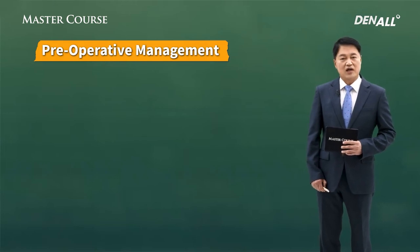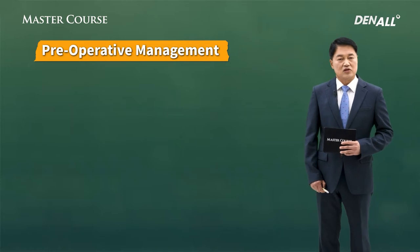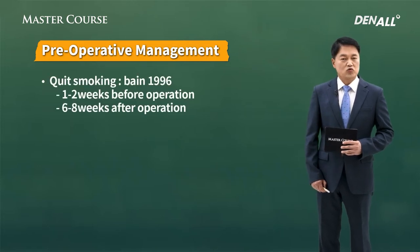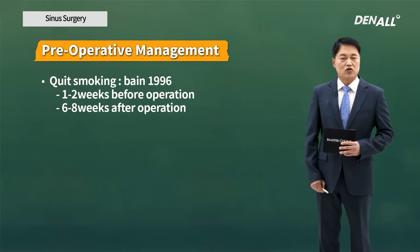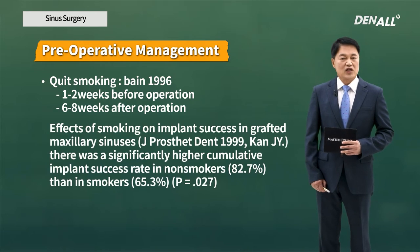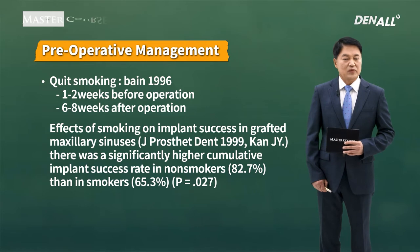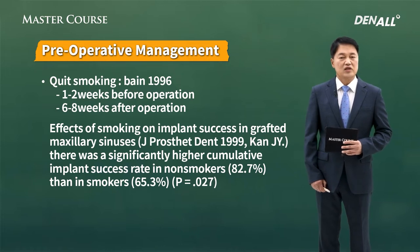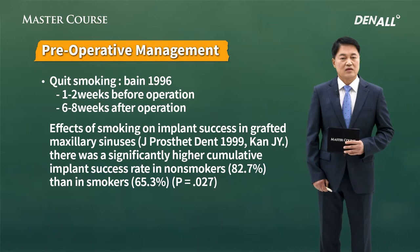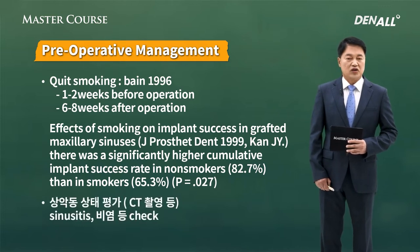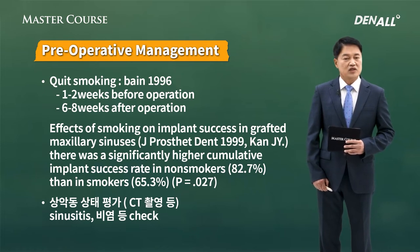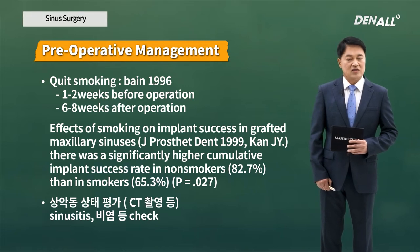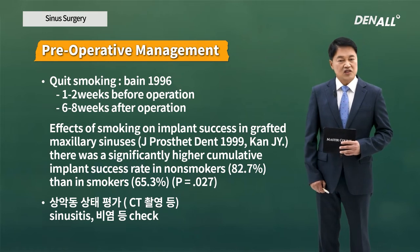Before we do sinus surgery, we need to manage these factors. First, you need to tell the patient to quit smoking. Bain and others in 1996 recommended abstaining from smoking one to two weeks before surgery and six to eight weeks after surgery. There was a meaningful difference between smokers and non-smokers in the literature. Also, before sinus surgery, CT needs to be taken to evaluate the state of the sinus — you need to check whether there is sinusitis, rhinitis, or other inflammation.